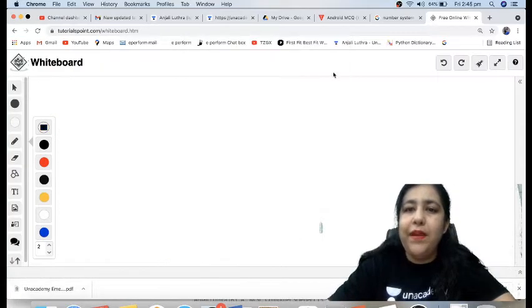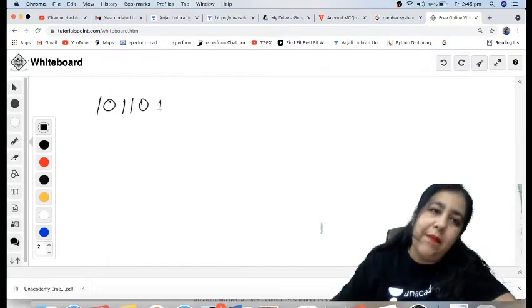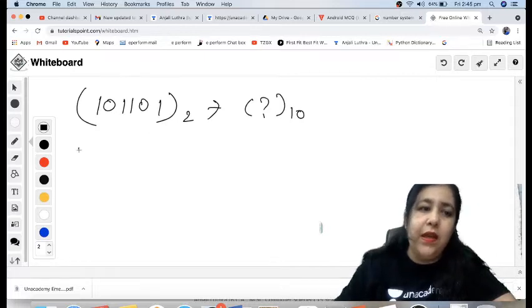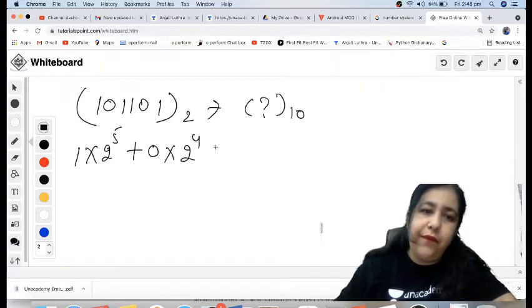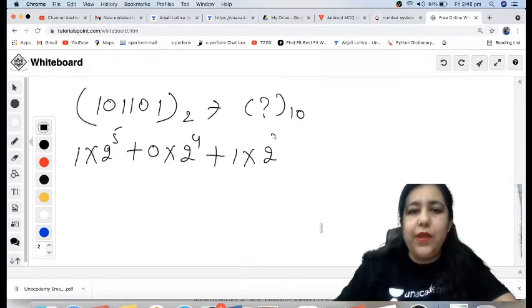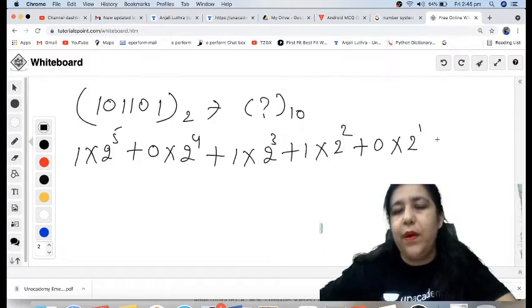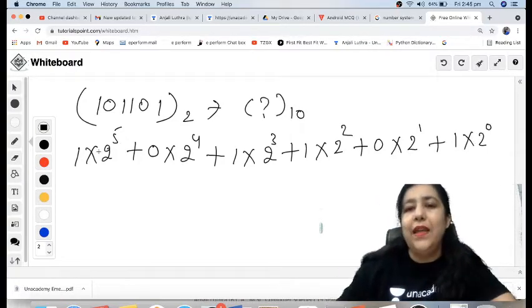So this is how we convert a binary number to a decimal number. It is a small number, it is easy. So if you have this number and you are asked for the decimal, how many digits are there? 1, 2, 3, 4, 5, 6. 6 digits. So 1 into 2 raised to the power 5, 0 into 2 raised to the power 4, 1 into 2 raised to the power 3, plus 1 into 2 raised to the power 2, plus 0 into 2 raised to the power 1, plus 1 into 2 raised to the power 0.